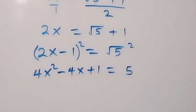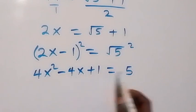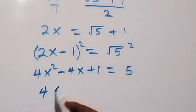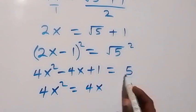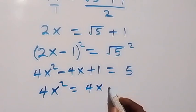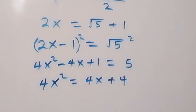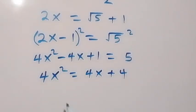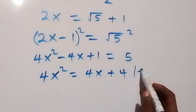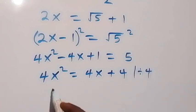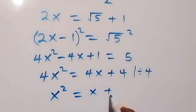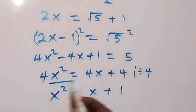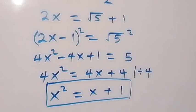Rearranging, we get 4x squared equals 4x plus 4. Dividing through by 4 gives us x squared equals x plus 1. We will keep this key relation and use it going forward.